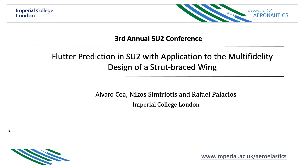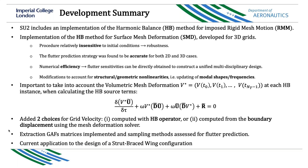In my understanding, the work you did adds to the existing harmonic balance: mesh deformation, RBF interpolation, and the modal representation of the structure. Yes, that is true. Nikos also needed to include source terms within the harmonic balance solution for the volumetric mesh deformations in the 3D case. There have been quite a few things added — I wouldn't know exactly how it differs from what was already in SU2, but I know there's been plenty of work.